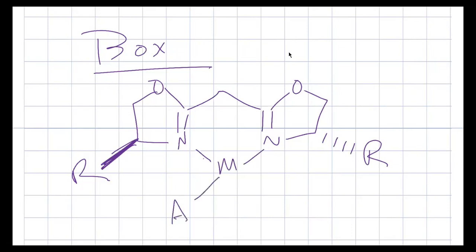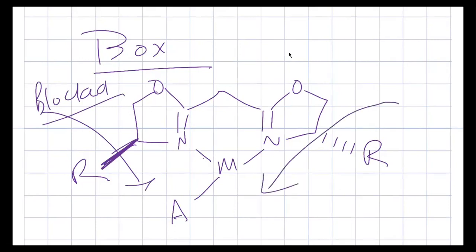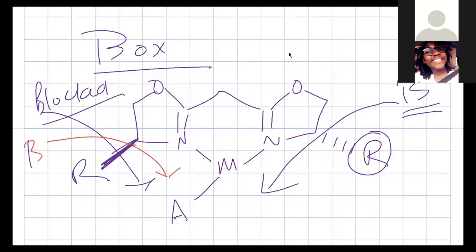When you add A and B together, if you add A first, when B approaches, this catalyst is going to force B to come from a specific direction. Over here, if it tried to come from this side it'll be blocked — it's going to go to the top, come from this side, because you see how R is going back into the page. B can only approach from that side because it costs less energy.